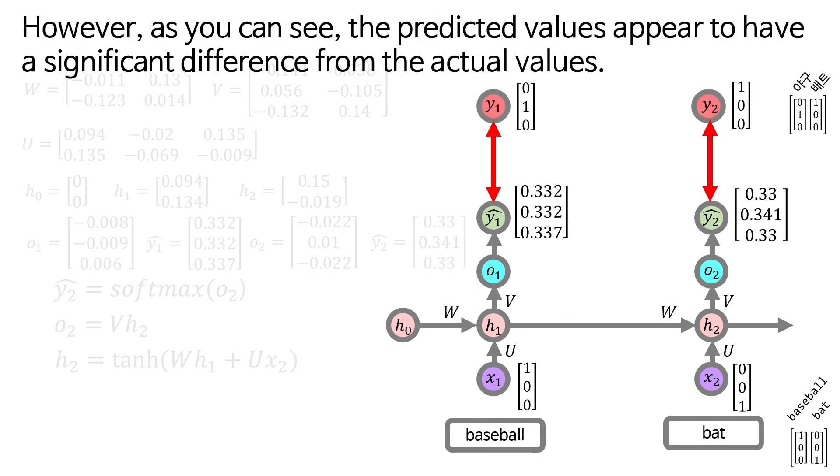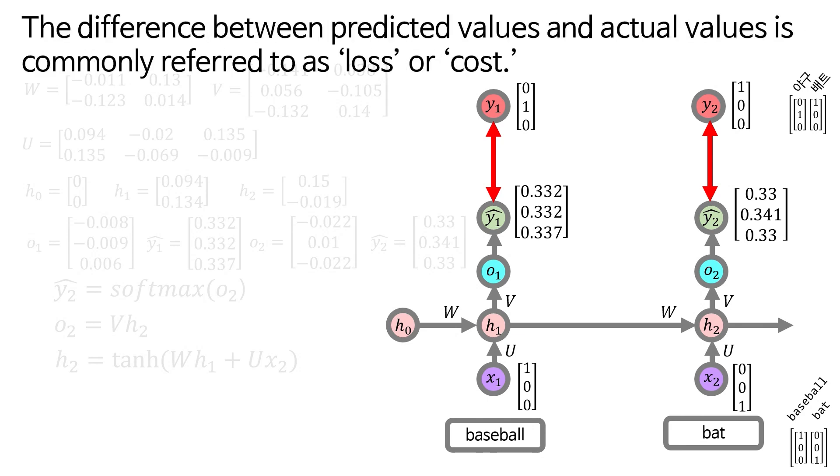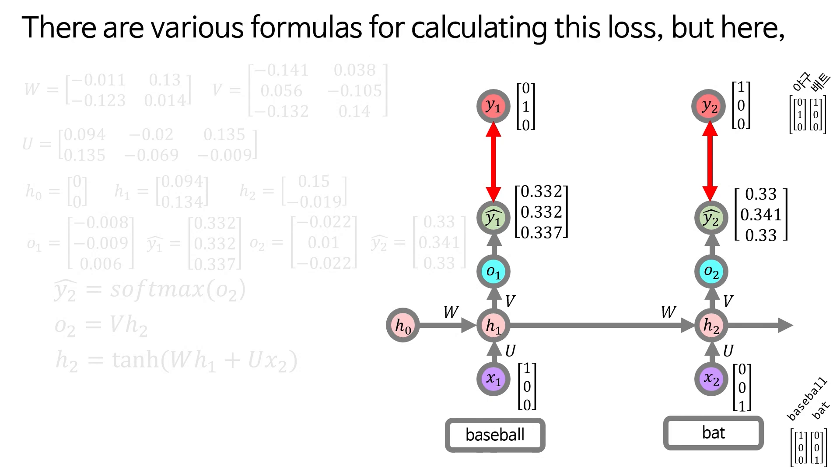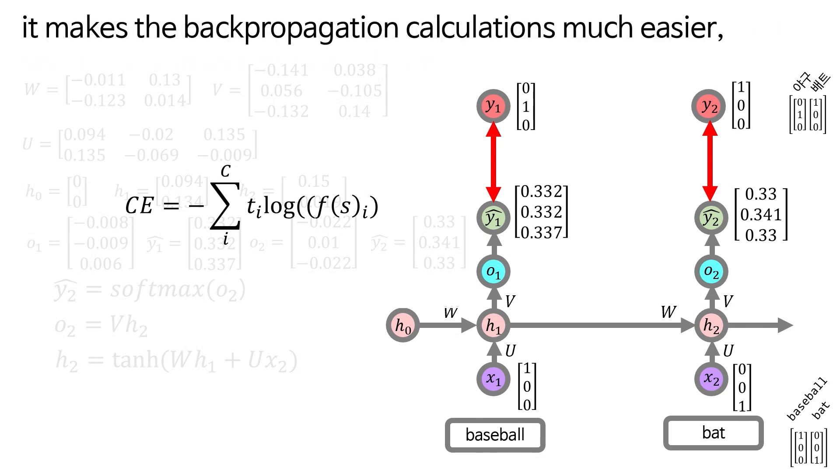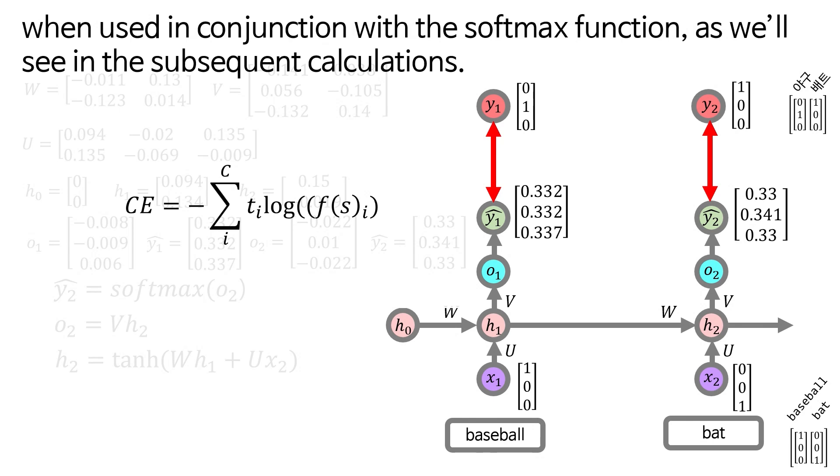However, as you can see, the predicted values appear to have a significant difference from the actual values. The difference between predicted values and actual values is commonly referred to as loss or cost. There are various formulas for calculating this loss, but here, we will use the cross entropy loss function. The reason for using cross entropy is that it makes the backpropagation calculations much easier when used in conjunction with the softmax function, as we'll see in the subsequent calculations.